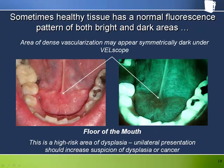Although the symmetry and shape of this dark area under Velscope is suggestive of normal tissue, the floor of the mouth is a high risk area for dysplasia. Watch out for non-symmetrical areas giving a unilateral presentation — these should increase suspicion of dysplasia or oral cancer.